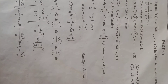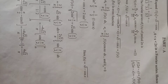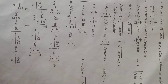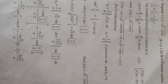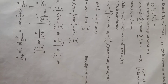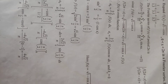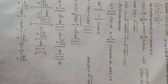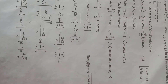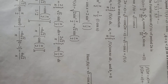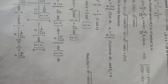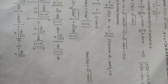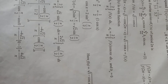Expand f of x equal to square root of 1 minus cos x, where x tends from 0 to 2 pi, in the Fourier series. Hence evaluate 1 divided by 1.3 plus 1 divided by 3.5 plus 1 divided by 5.7 and so on. The Fourier series of f of x of period 2 pi is f of x equal to a naught by 2 plus sigma n from 1 to infinity of a of n cos nx plus sigma n equal to 1 to infinity b of n sin nx.